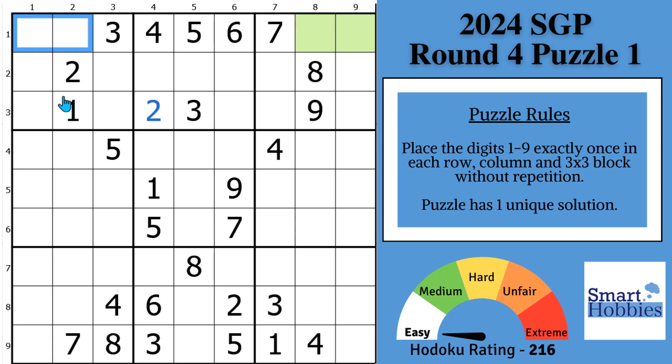Greetings, friend. I'm helping you solve round 4, puzzle 1 of the 2024 Sudoku Grand Prix, hosted by China. This puzzle is rated 216, Easy. See how far you can get without marks. And when I solve these green cells, I will reveal my secret tip that will change the way you use Snyder Notation forever.